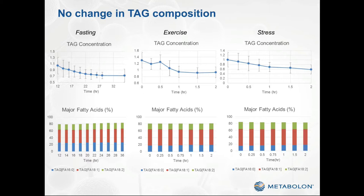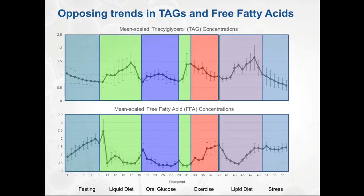So far I've only discussed the triacylglycerol concentrations. You may be wondering what happened to the other lipids in these subjects during all of the challenges. In fact, there were relatively few changes in the other complex lipids during these relatively short-term perturbations. However, when we looked at the free fatty acid concentrations, we saw a number of interesting trends — many of which were the mirror image of the triacylglycerol. For example, during fasting, triacylglycerol concentrations went down whereas free fatty acid concentrations went up. This makes sense because when energy expenditure is high, triacylglycerols are taken out of storage, broken down to their constituent free fatty acids, which are then utilized for energy through the process of free fatty acid oxidation.